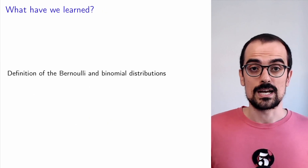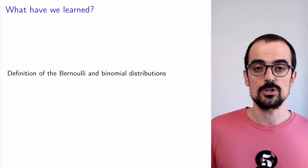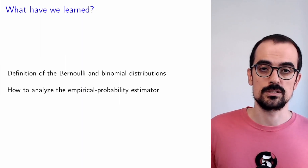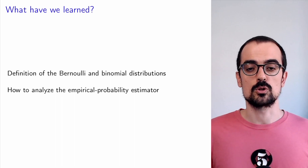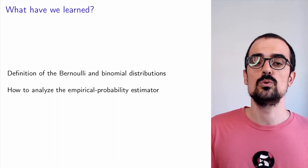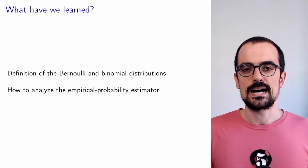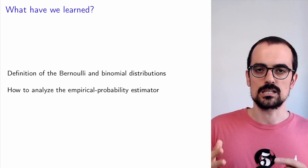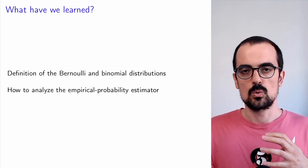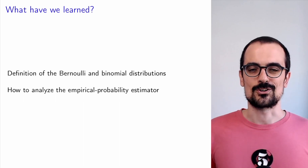To summarize, we have learned the definition of the Bernoulli and the binomial distributions, and we have used the binomial distribution to study the empirical probability estimator. This gives us an example of how tools from probability theory can help us understand how a statistical technique performs under certain assumptions when we vary, for example, the number of available data points.